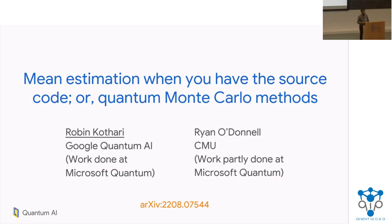Thanks everyone for coming to my talk. I'm going to be talking about mean estimation when you have the source code, or quantum Monte Carlo methods. My name is Robin. I'm at Google Quantum AI, but this work was done while I was at Microsoft Quantum. This is joint work with Ryan O'Donnell, who's a professor at Carnegie Mellon, but this work was partly done while he was visiting me at Microsoft Quantum.